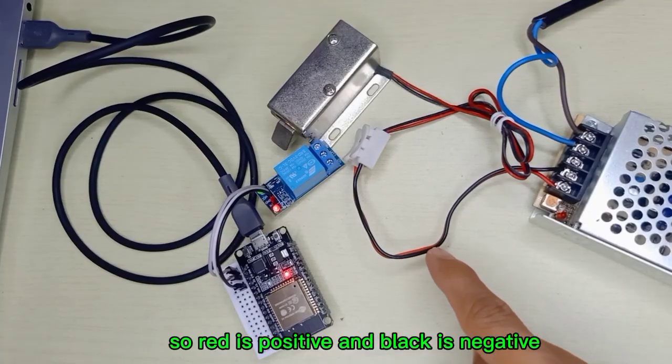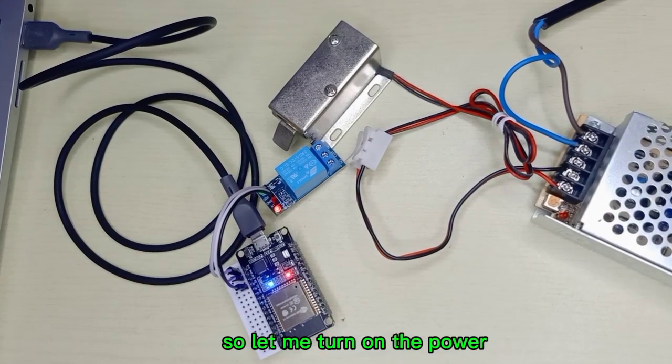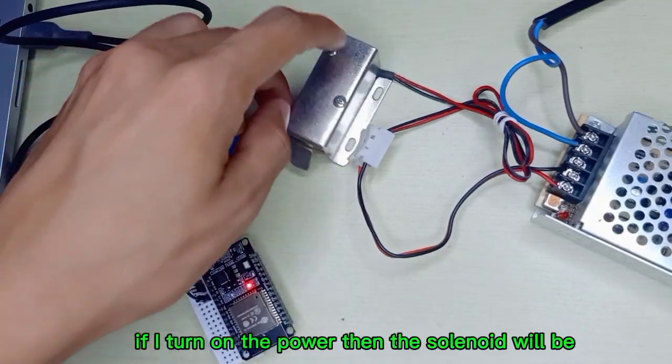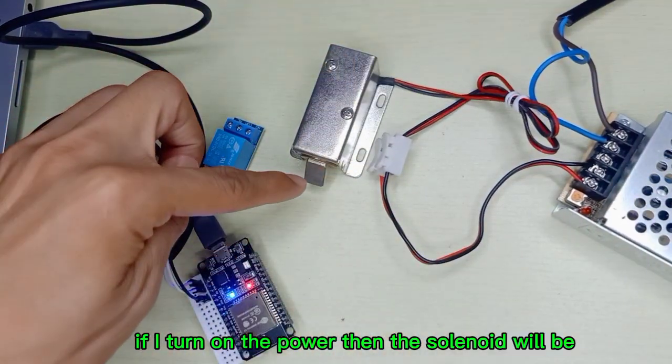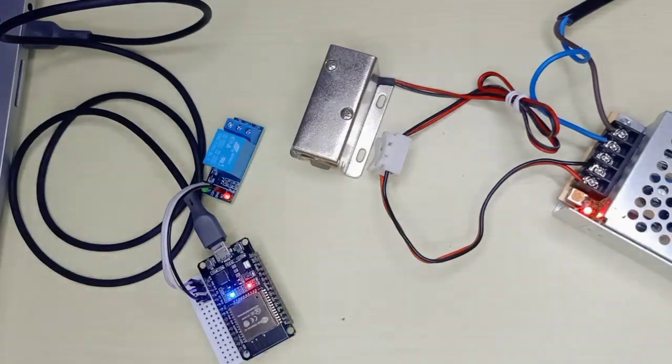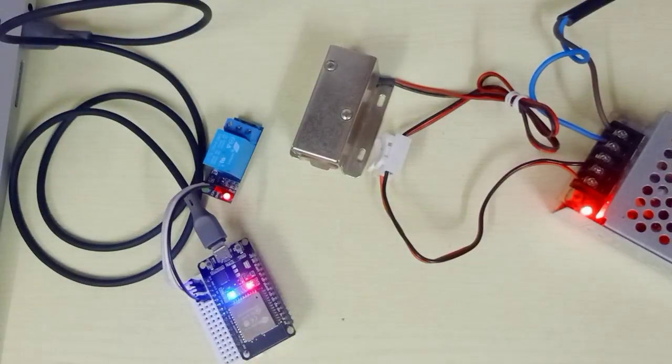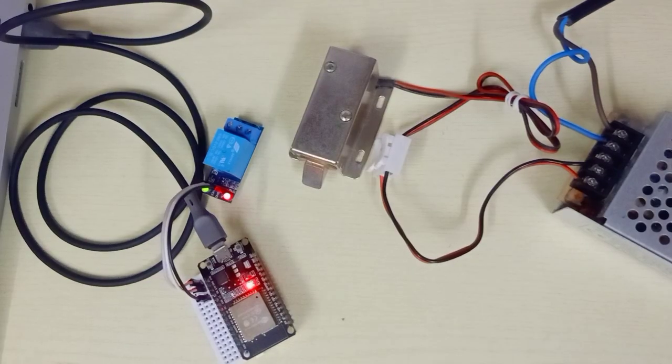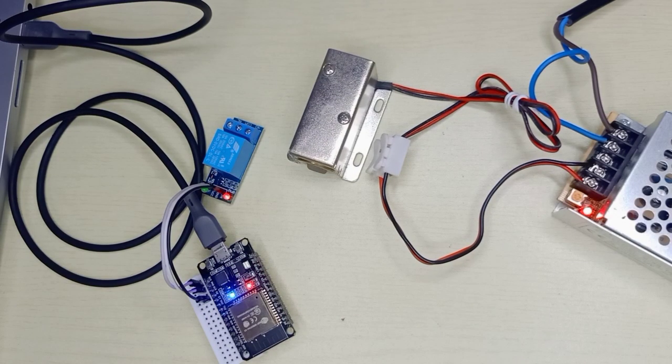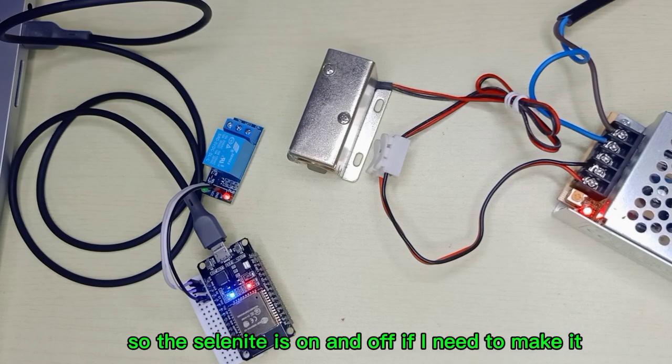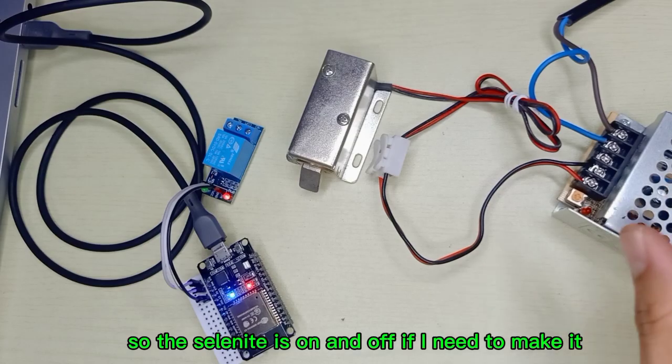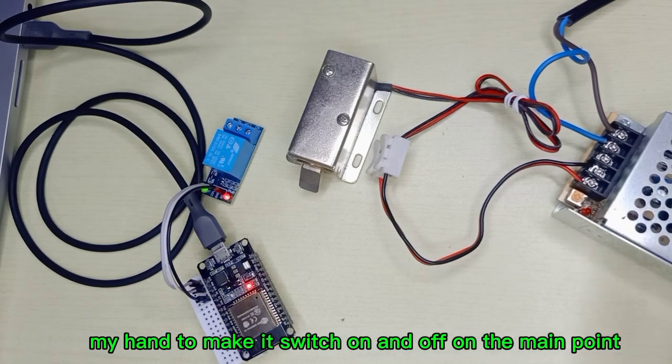Let me turn on the power. If I turn on the power then the solenoid will be unlocked. So the solenoid is on and off. If I need to make it switch on and off I need to use my hand.